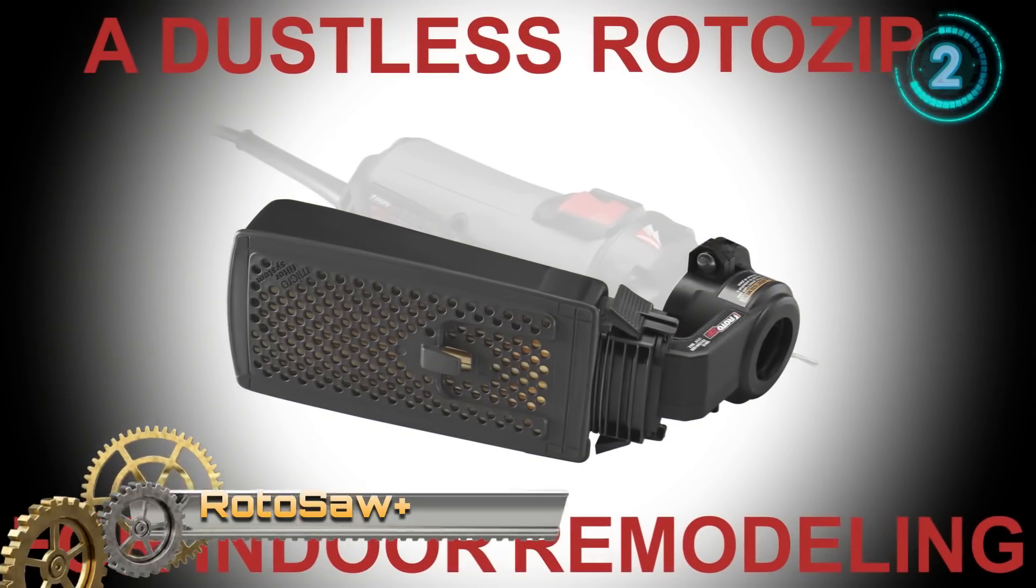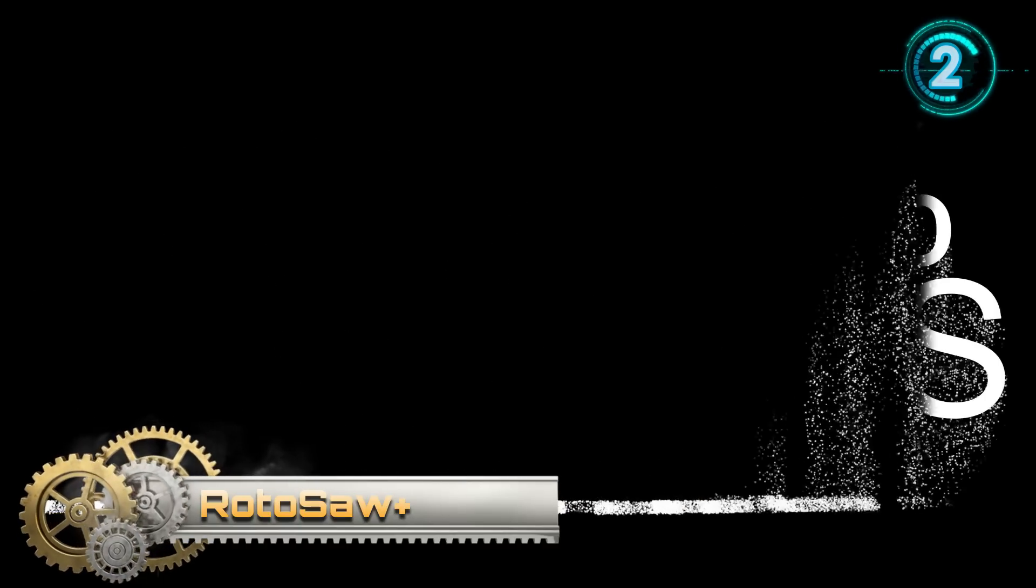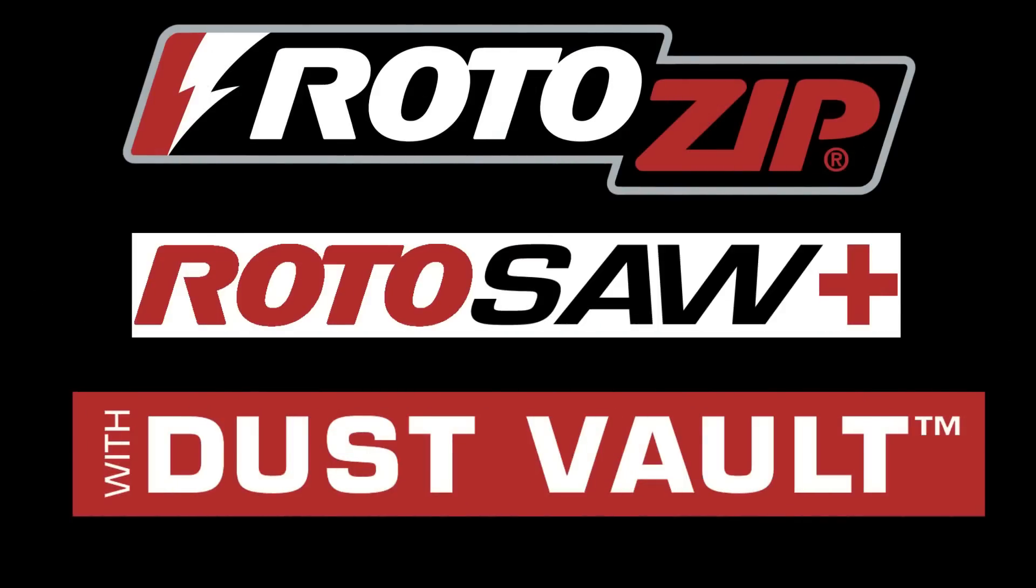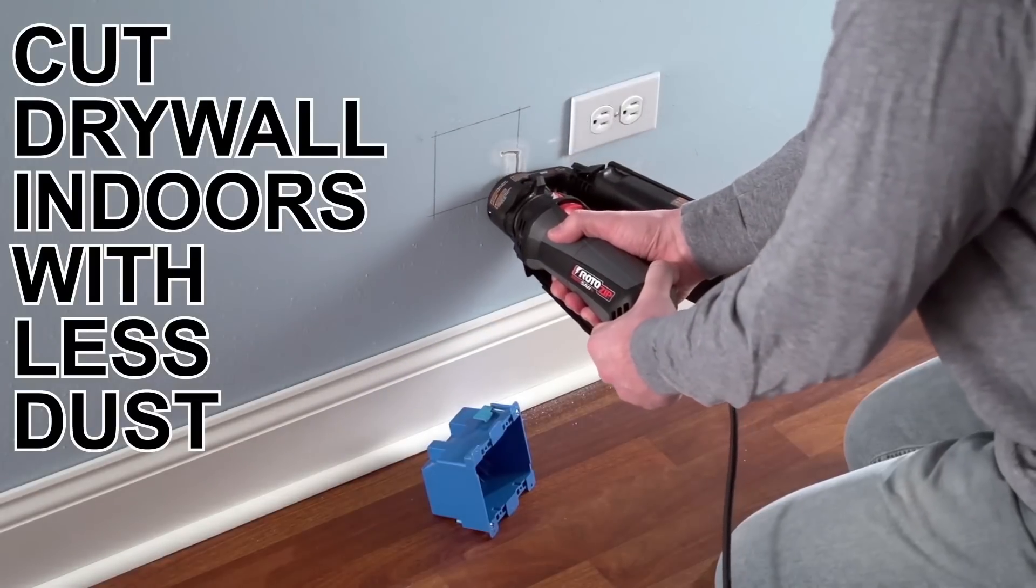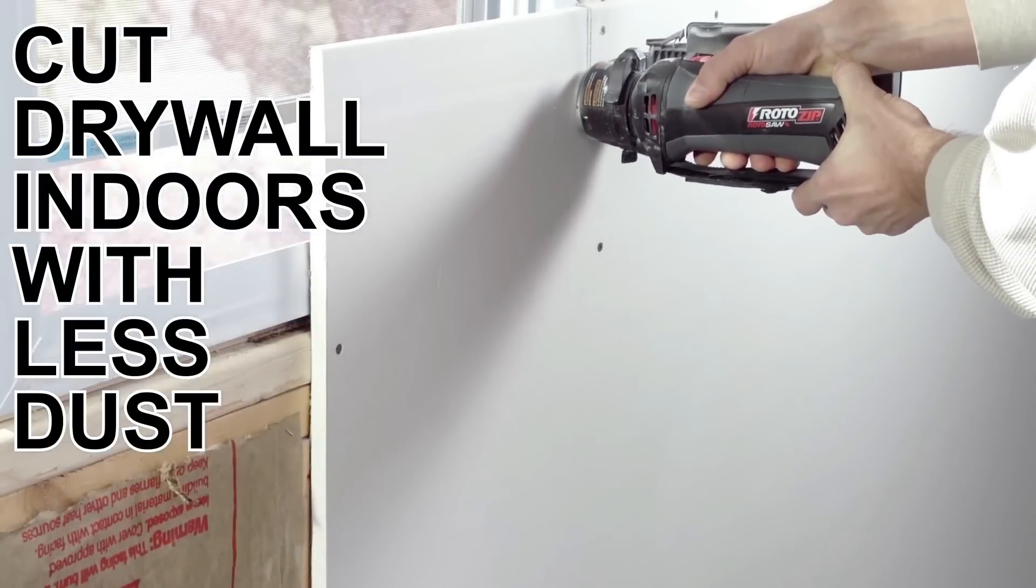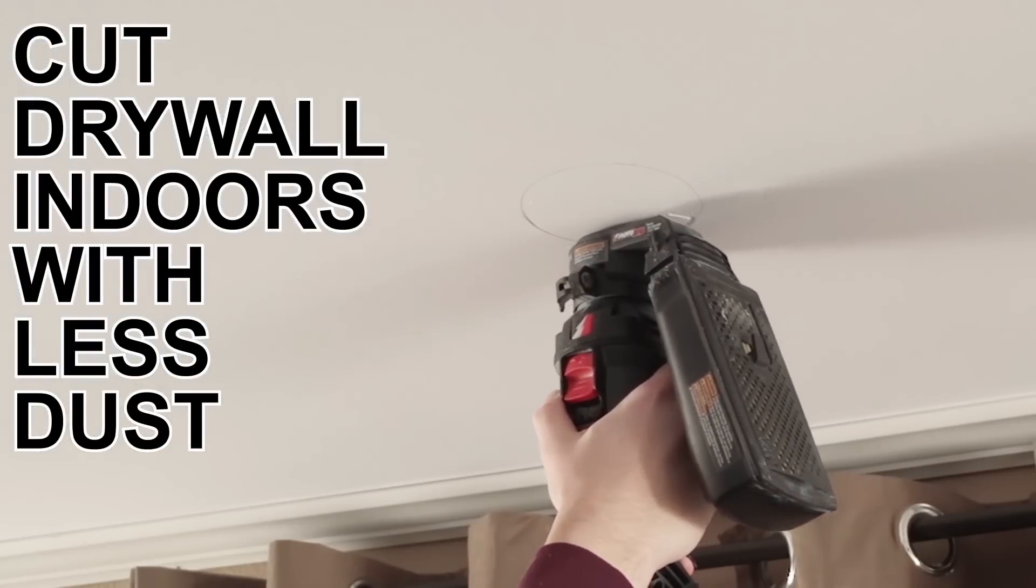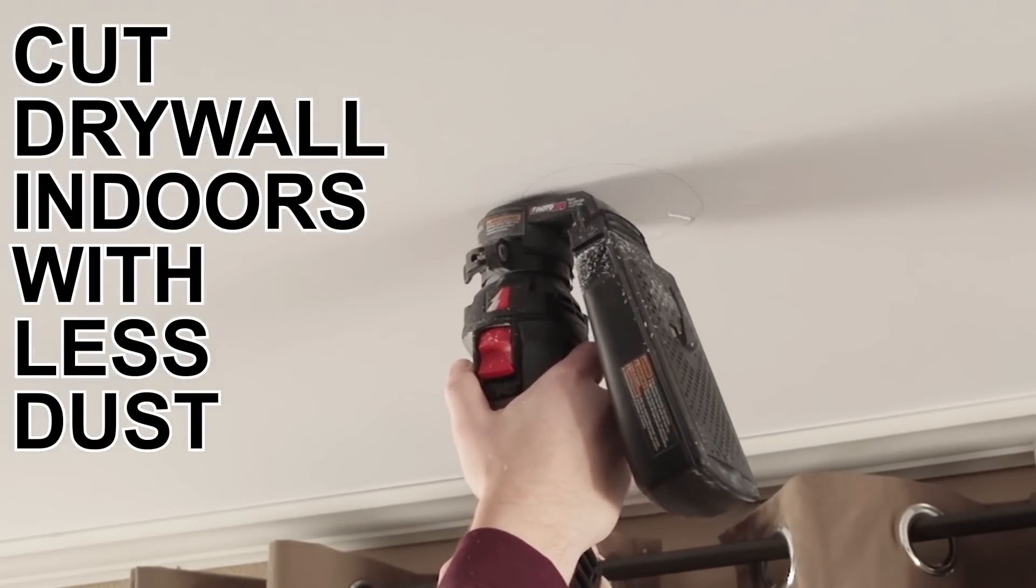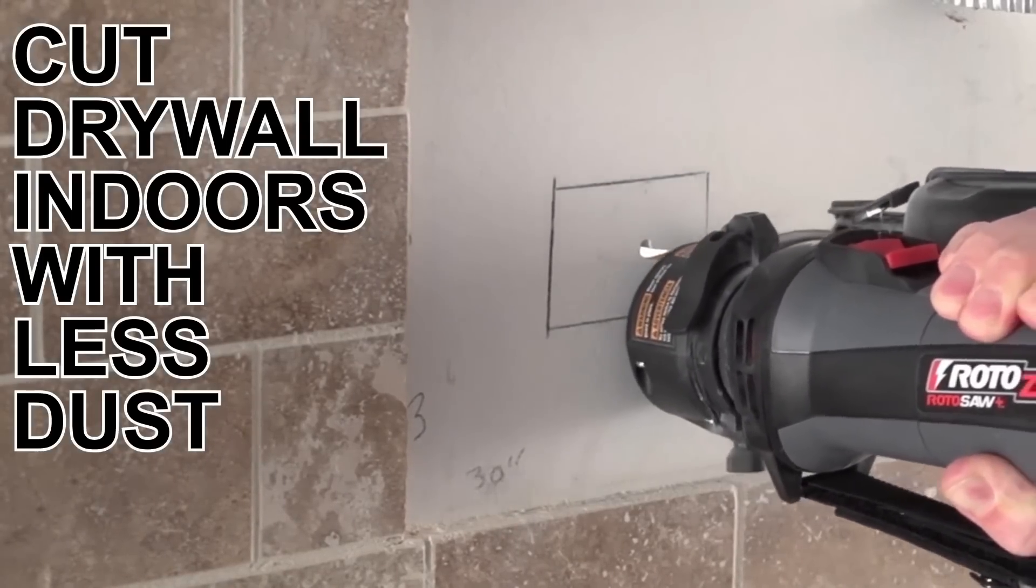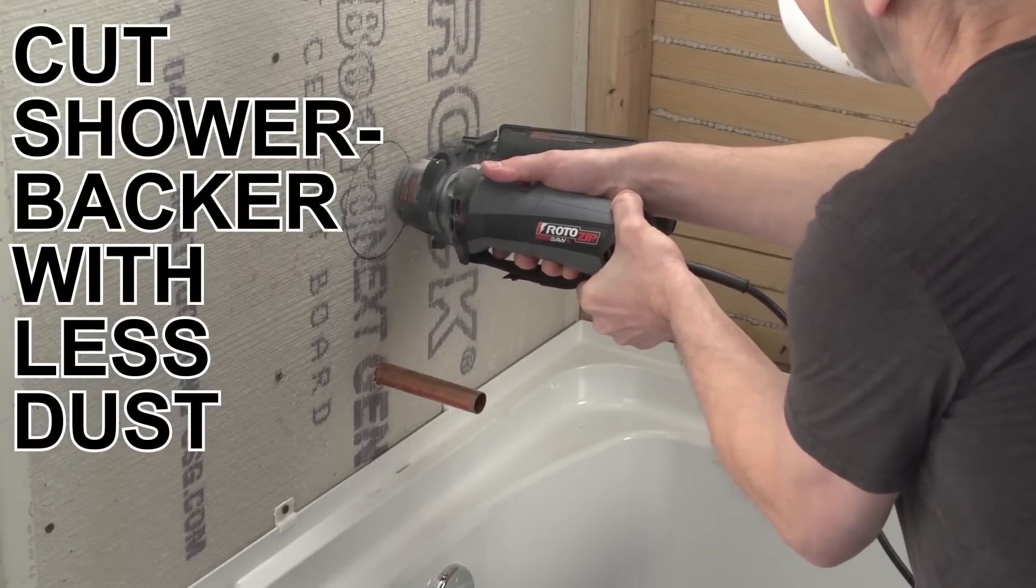Roto Saw Plus. The Roto Saw Plus with Dust Vault combines the power of a 6-amp cutting tool with an integrated dust collection system for use on the toughest materials. The system eliminates the need for a vacuum, making it ideal for fast, convenient use in finished spaces, saving you time and money on the job.